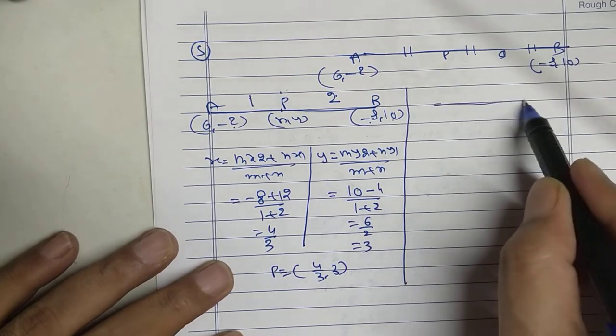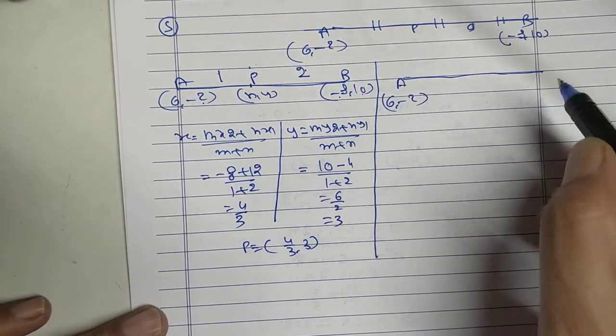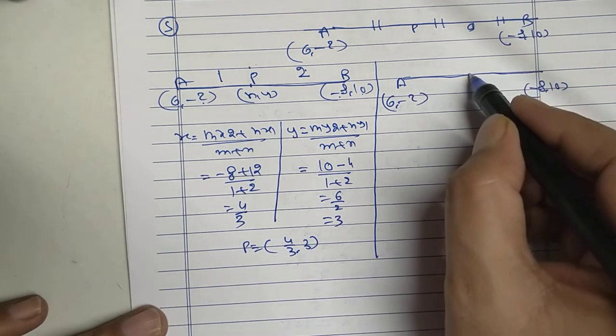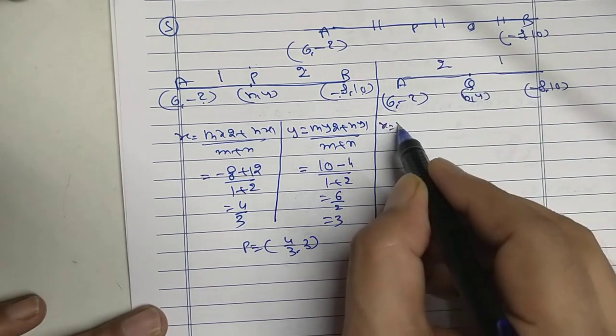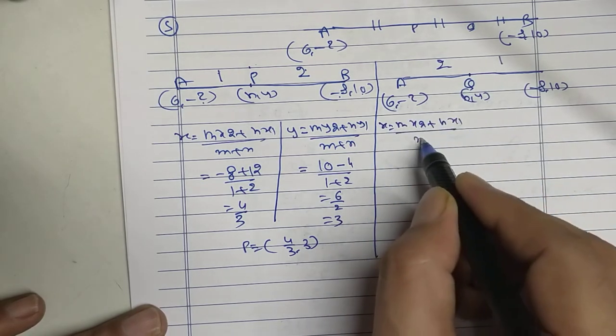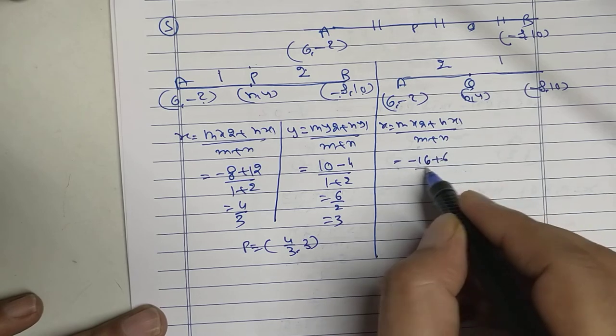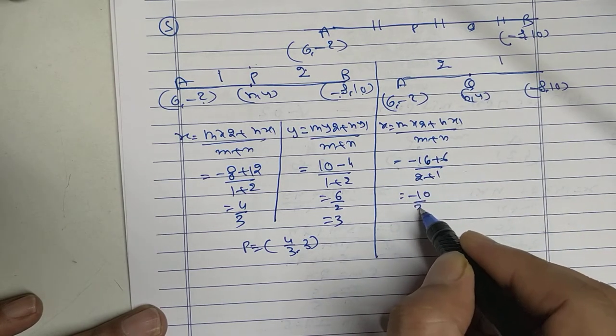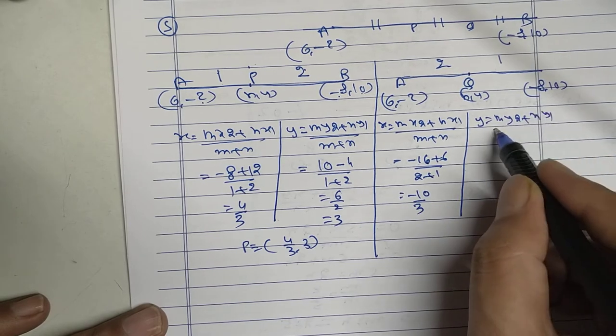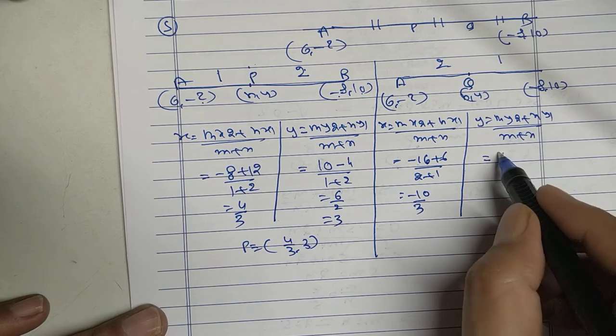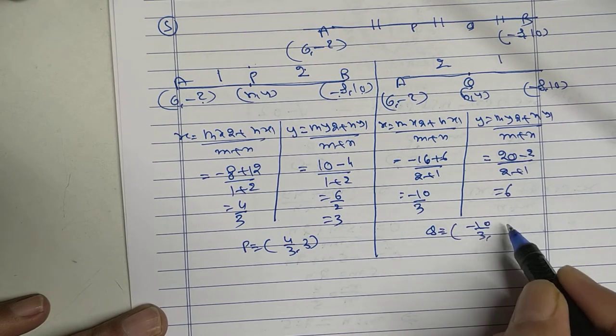Now I will take for Q. Right. A 6 and minus 2. Minus 8 and 10. This is Q. Q divides 2 is to 1. X equal to m x2 plus n x1 upon m plus n. M x2 minus 16. N x1 plus 6. Upon 2 plus 1. That is minus 10 upon 3. Y equal to m y2 plus n y1 upon m plus n. 20 minus 2 upon 2 plus 1 equal to 6. The coordinates of Q is minus 10 upon 3 and 6.